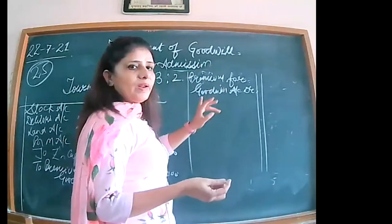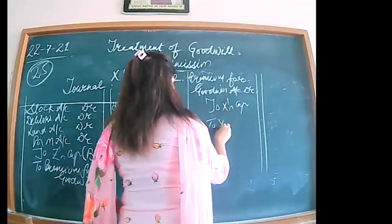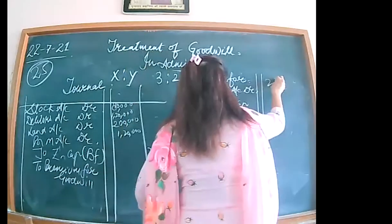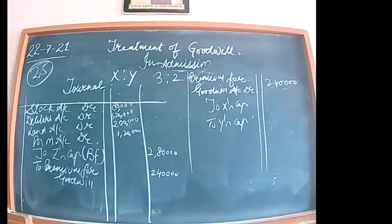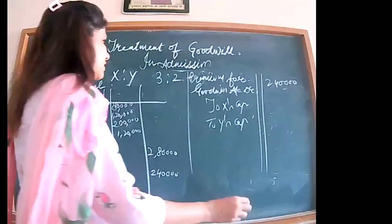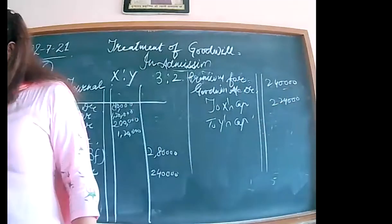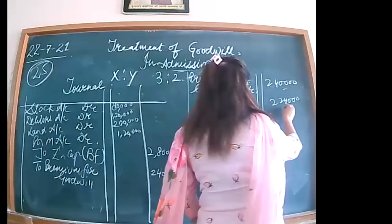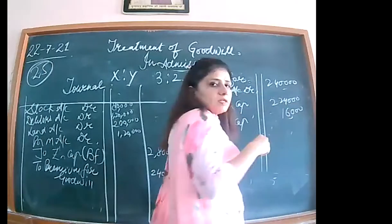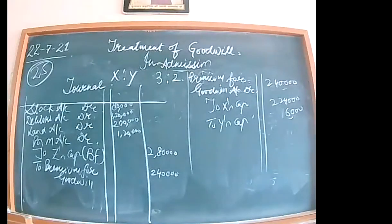The second entry: premium for goodwill account debited to X's capital and Y's capital. Premium for goodwill was 2,40,000, divided in ratio 14 is to 1, so 14/15 and 1/15. The narration: being premium for goodwill transferred to the capitals of X and Y in their sacrificing ratio.